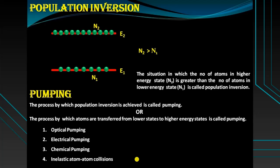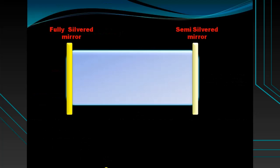The commonly used pumping methods are: optical pumping, electrical pumping, chemical pumping, and inelastic atom-atom collisions. In optical pumping, energy is supplied in the form of light or photons. In electrical pumping, a strong electric field is applied. In chemical pumping, the energy necessary for pumping is generated by a chemical reaction. In inelastic atom-atom collisions, population inversion is achieved by inelastic atom-atom collisions.